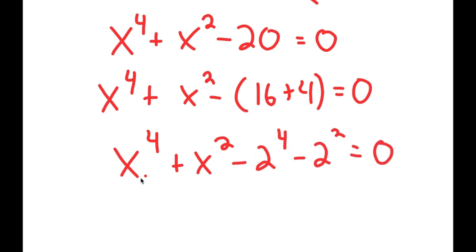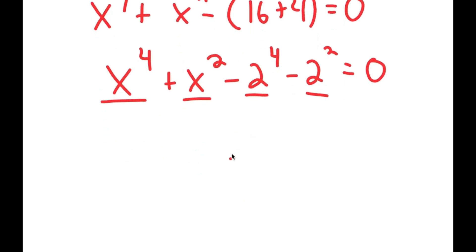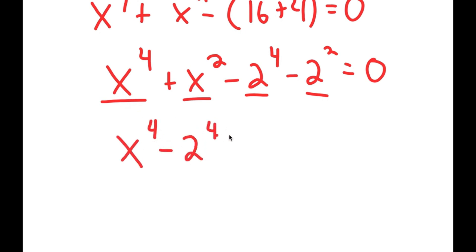Notice how I have something in the power of 4 and something in the power of 2, and they're both the same base. Now I can put the powers of 4 together and the powers of 2 together. So I get x to the power of 4 minus 2 to the power of 4, plus x squared minus 2 squared.